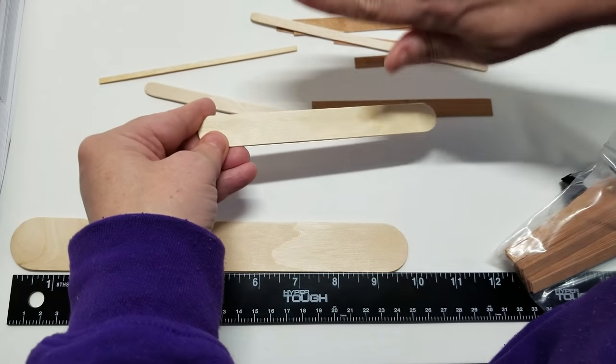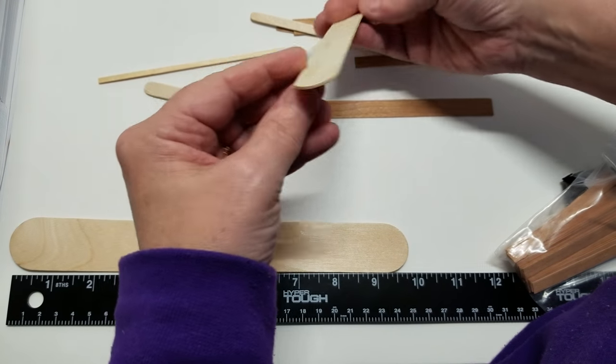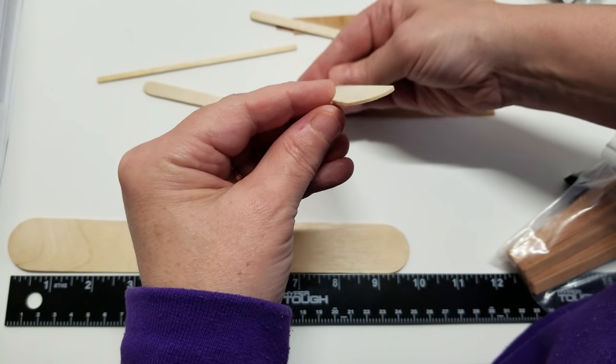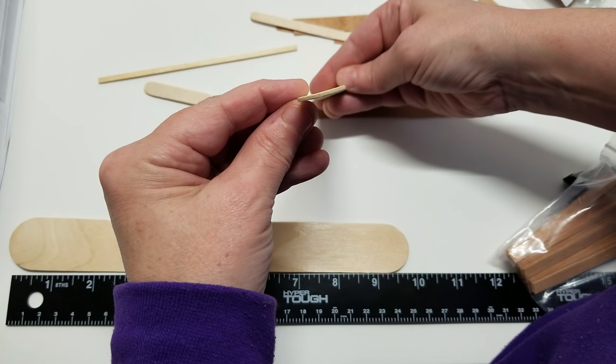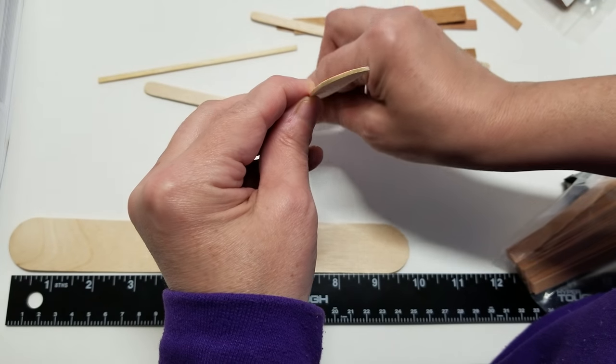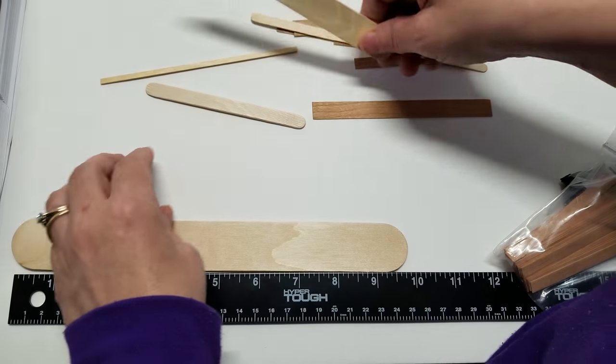Like this stick is already warping if you can see that. See how it's got like that little bow in it? So that's something you got to think about if you're using those.